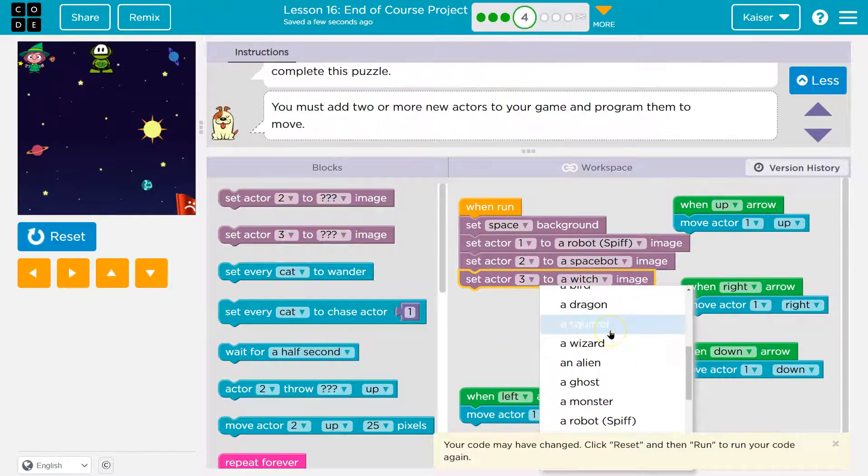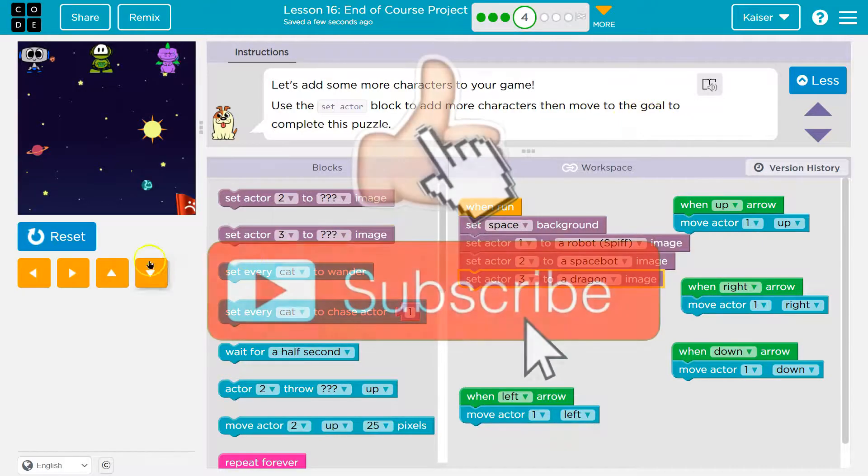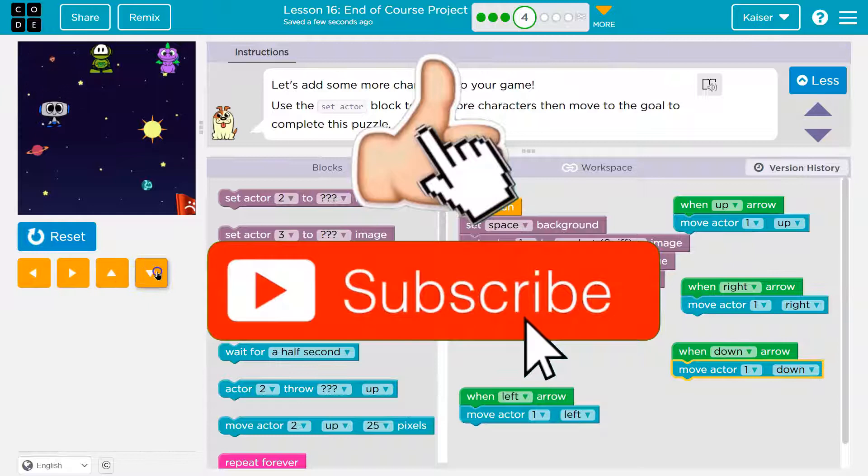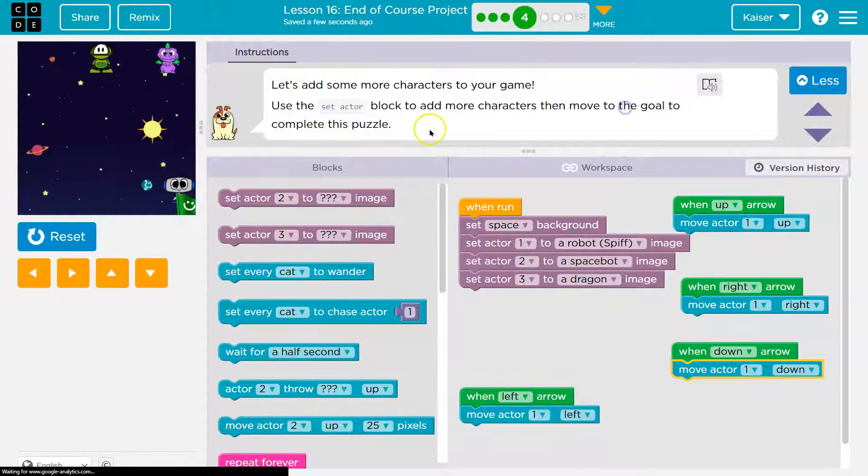So three, and dragon in space. That's cool. Cool. All right. And then set actor block to add more characters, then move to the goal. Easy enough. So let me hit reset, run, and then zoop. Zoop. Go, robot, go with all my friends here. Yeah, onward.